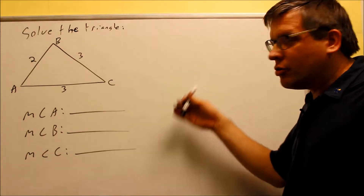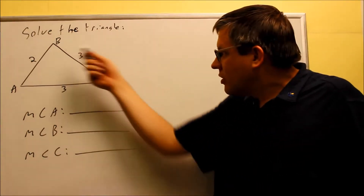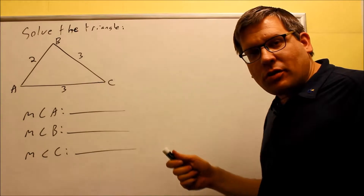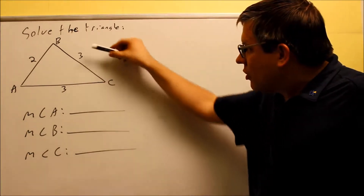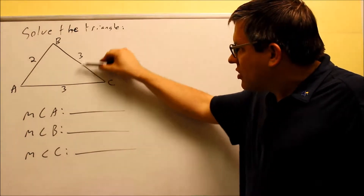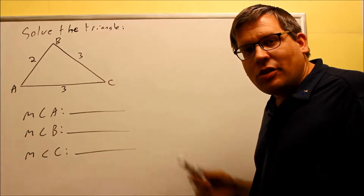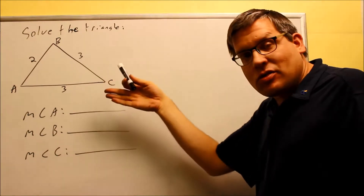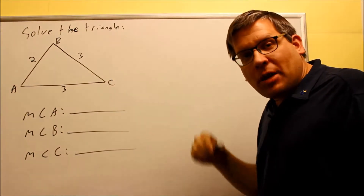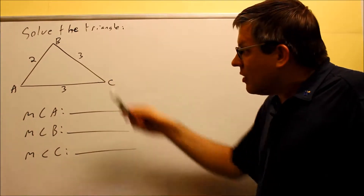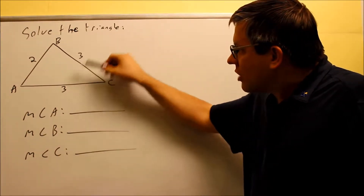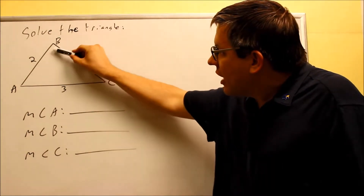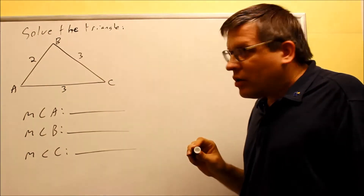Here's another problem we're going to do that has three given sides. What's interesting about this problem is we notice that two of the sides are the same, and this means that it's an isosceles triangle. From geometry, that means that if these two sides are equal, then these two angles must be equal.